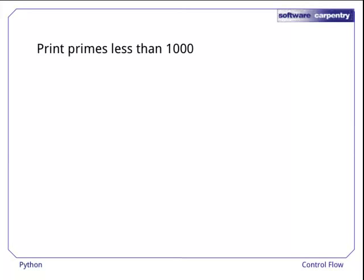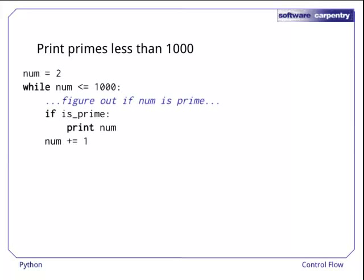To see how this works, let's write a program to print out all the prime numbers less than 1000. The skeleton is simple. Start with 2, since 1 isn't a prime, and loop up to 1000. If the number is prime, print it out.